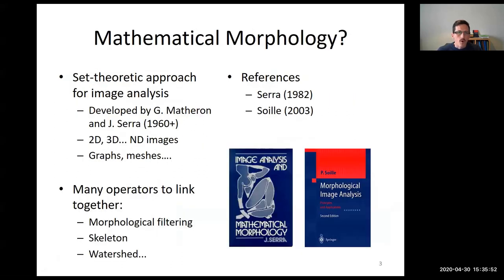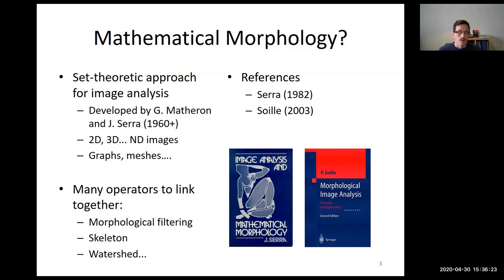What is mathematical morphology? It's an approach for image analysis based on set theory, developed around 50 years ago by George Matheron and Jean Serra at Ecole des Mines de Fontainebleau. It is very generic: it works for 2D or 3D images or even larger dimensions, for binary or gray level images, and can be applied to other data structures such as graphs or meshes. There are many operators including the skeleton, the watershed, and morphological filters.